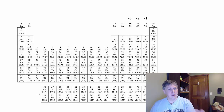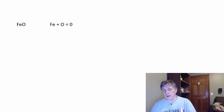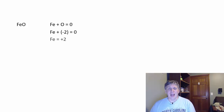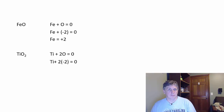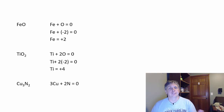If you have a compound with a variable charge element, you can figure out the cation's charge by looking at the anion and doing a little algebra. In FeO — one iron, one oxygen — oxygen is negative two, so iron must be plus two. In a titanium-oxygen compound with one titanium and two oxygens, oxygen is negative two each, so titanium must be plus four. In a copper-nitrogen compound with three coppers and two nitrogens, nitrogen is in group 5A so it's negative three, meaning copper must be plus two.